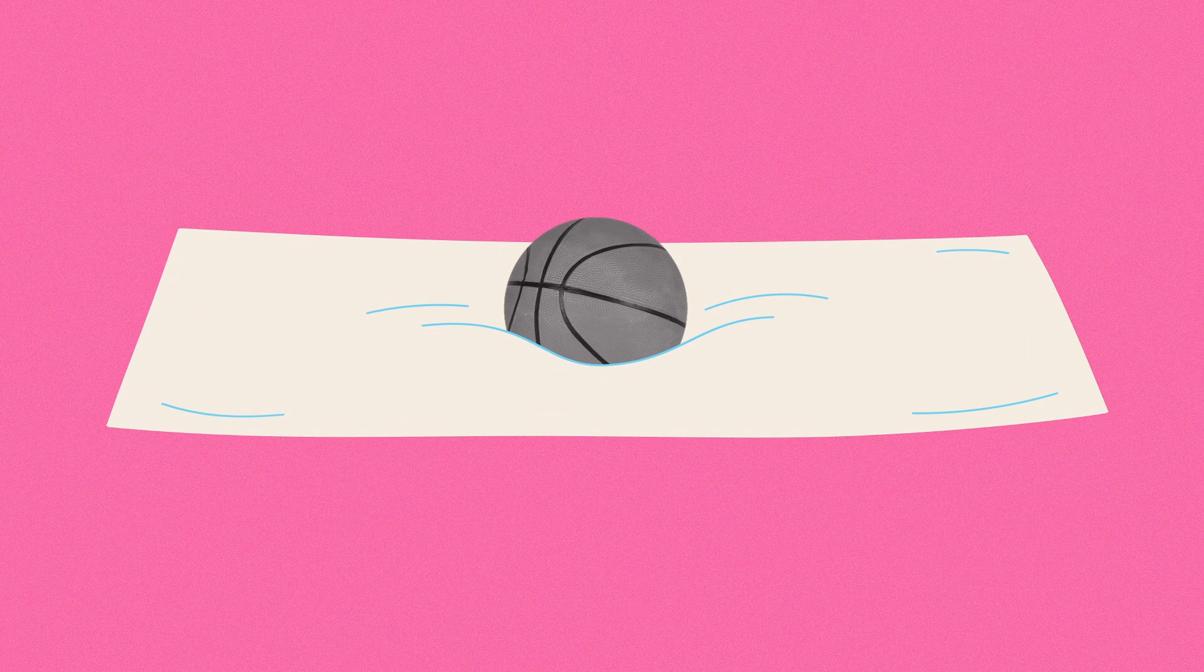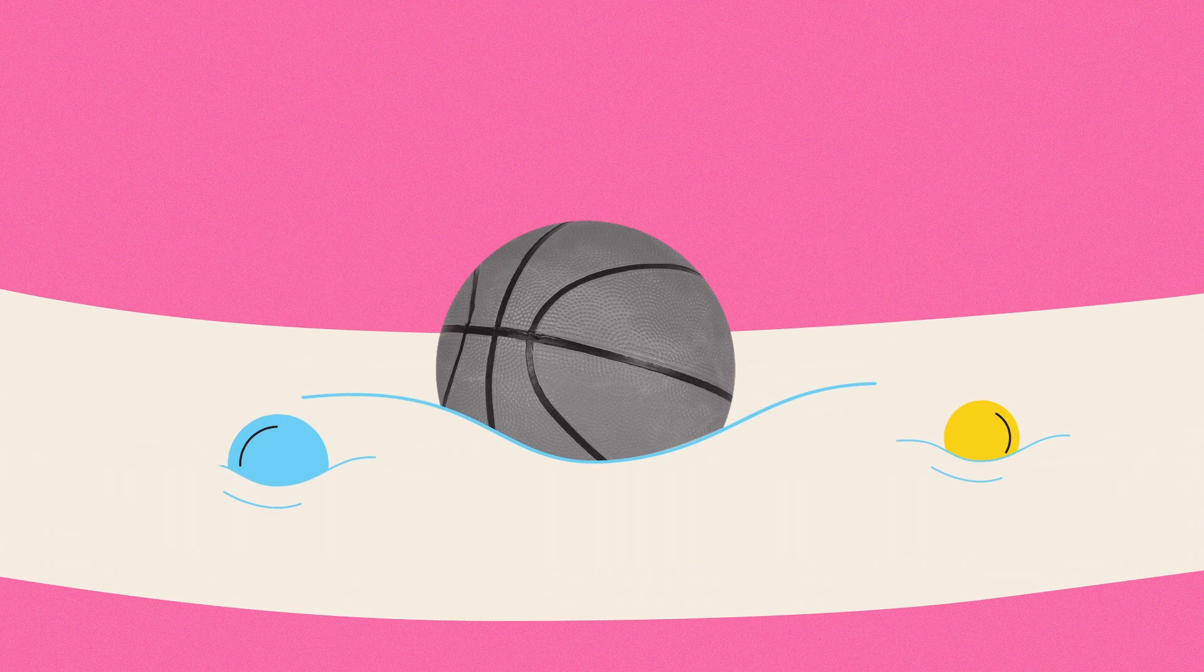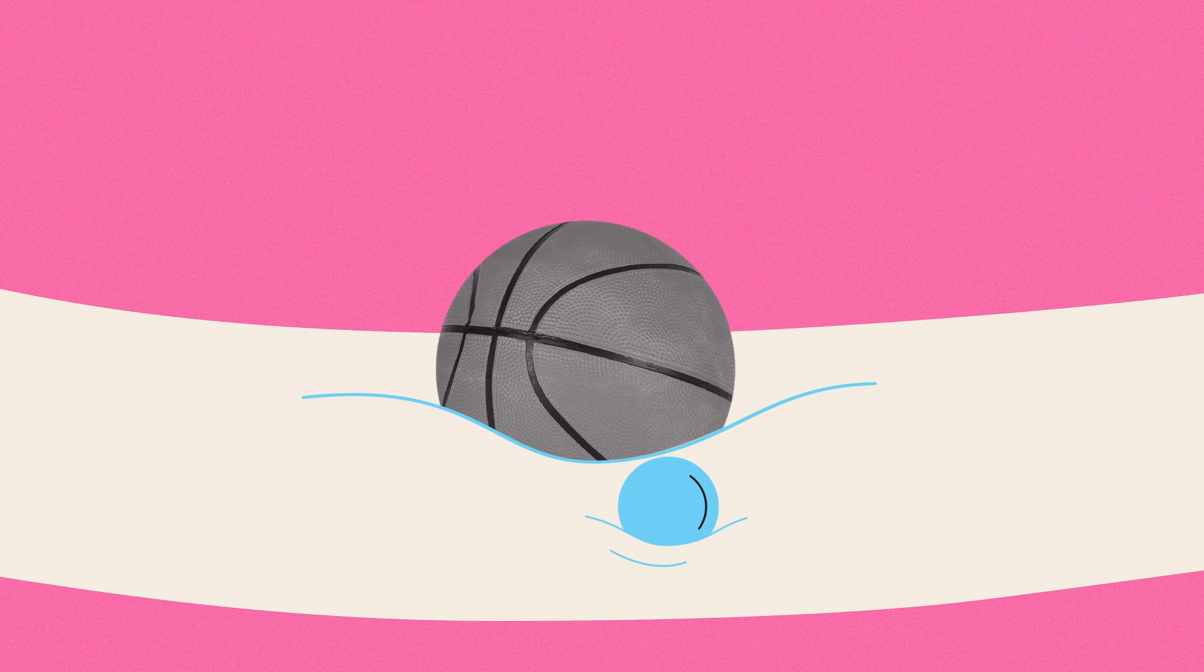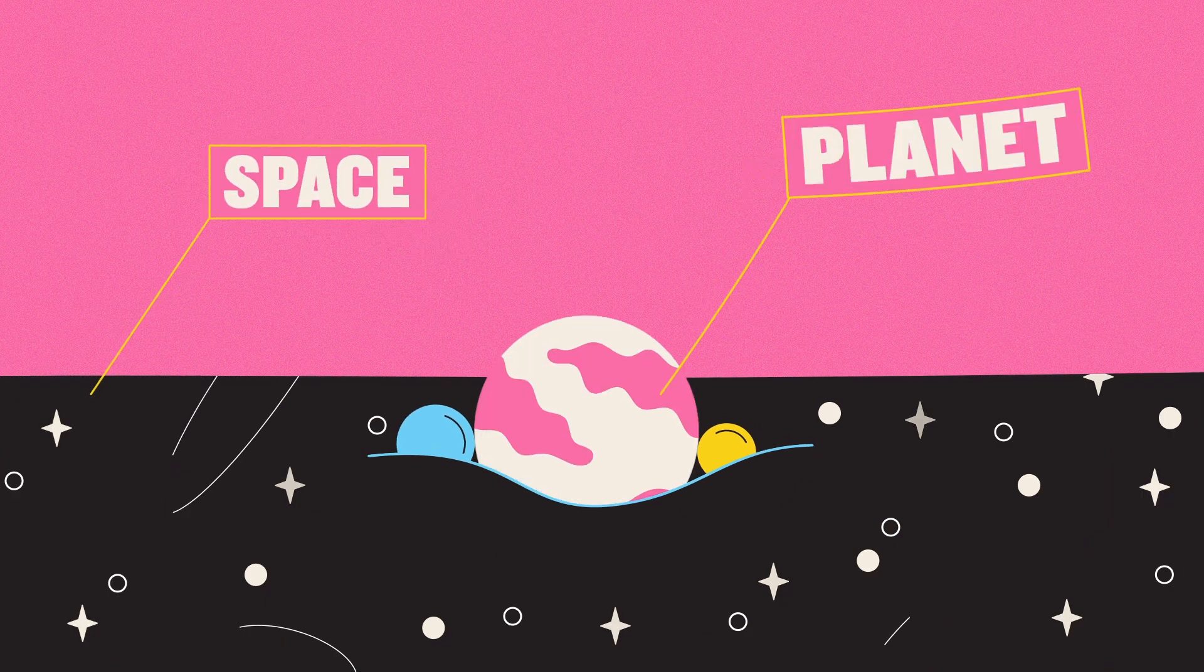Imagine a bed sheet being pulled tight by four people, one at each corner. If you were to place a basketball in the center of that sheet, it would create a dip in the fabric, and any smaller objects you place close enough on the sheet will all roll towards the basketball. This is essentially how gravity works. In this analogy, the sheet is space, the basketball is a planet,